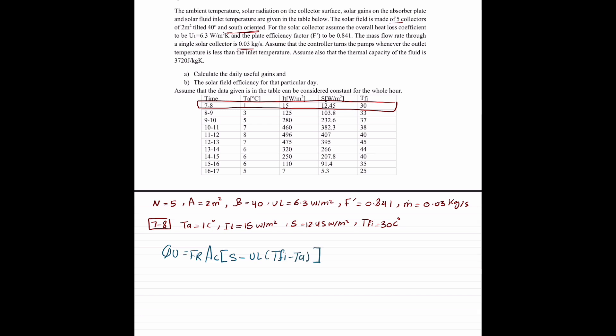Which is QU is equal to FR times AC times S minus UL times TFI minus T ambient. The only missing here is the FR.